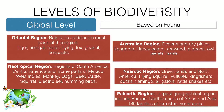The Nearctic region covers the greenlands and northern part of North America, with animals such as flying squirrels, vultures, kingfishers, ducks, and flamingos. The Palearctic region is the largest geographical region, including Europe, the northern part of Africa, and Asia, and has 135 families of terrestrial vertebrates.